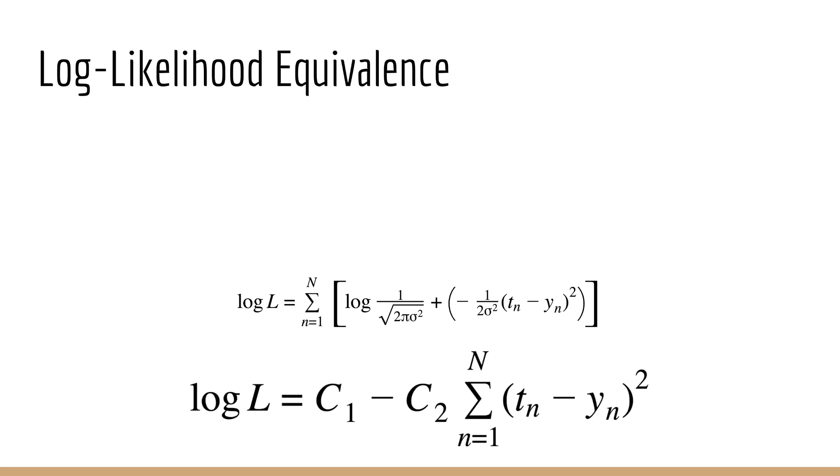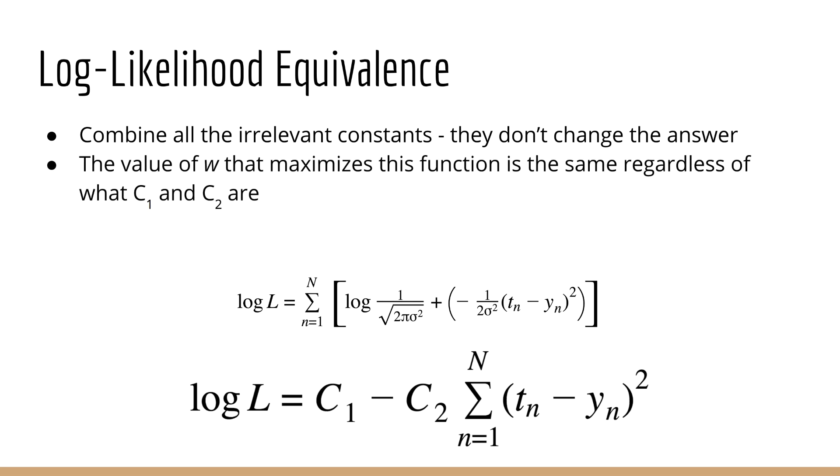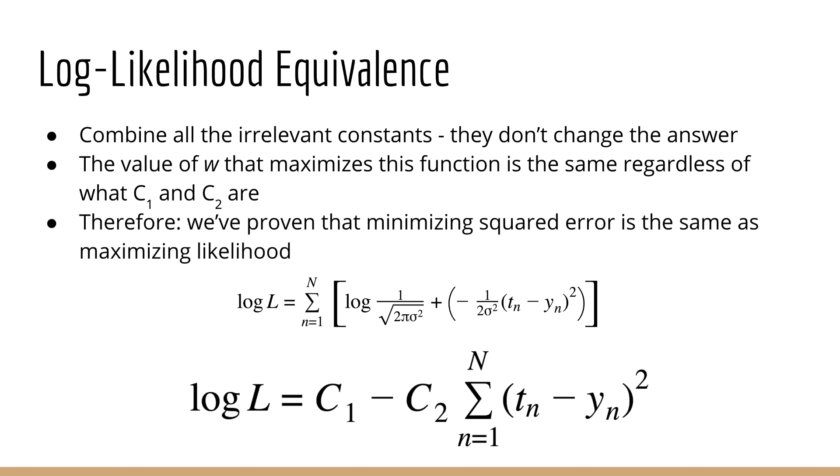Now what's interesting about this is that constants don't actually matter. They might yield a different value for the actual likelihood itself, but the likelihood value is irrelevant since what we care about are the weights w. We just want to minimize L, no matter what the scale is. In other words, it doesn't matter what these constants are, the value of w that minimizes the function will be the same. In other words, we've shown that maximizing the likelihood is equivalent to minimizing the squared error.